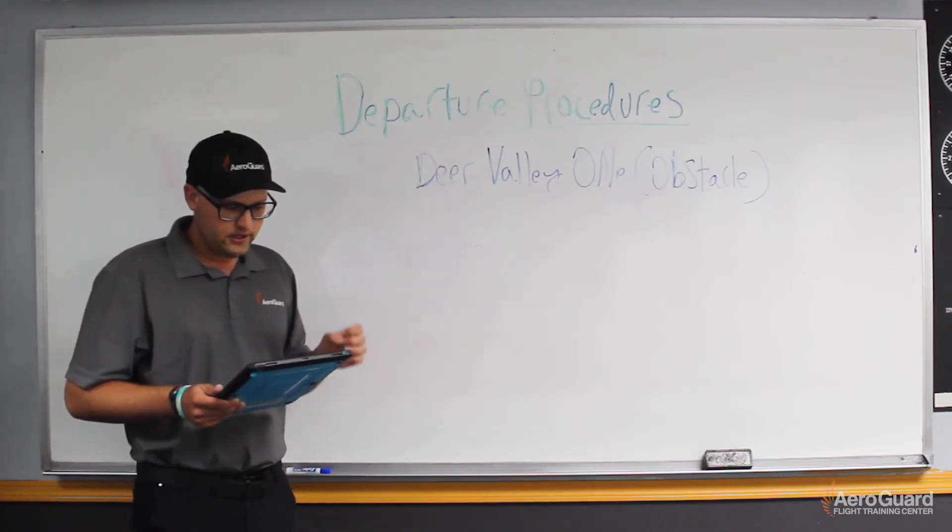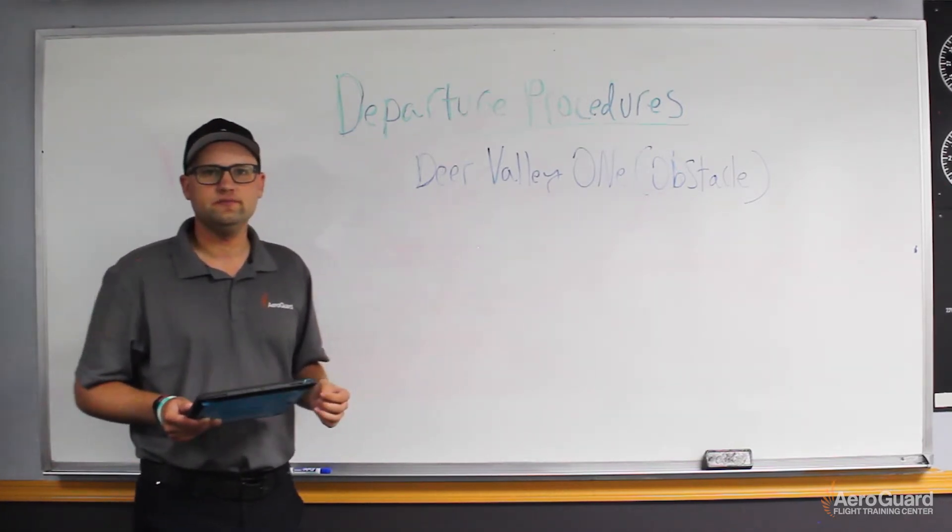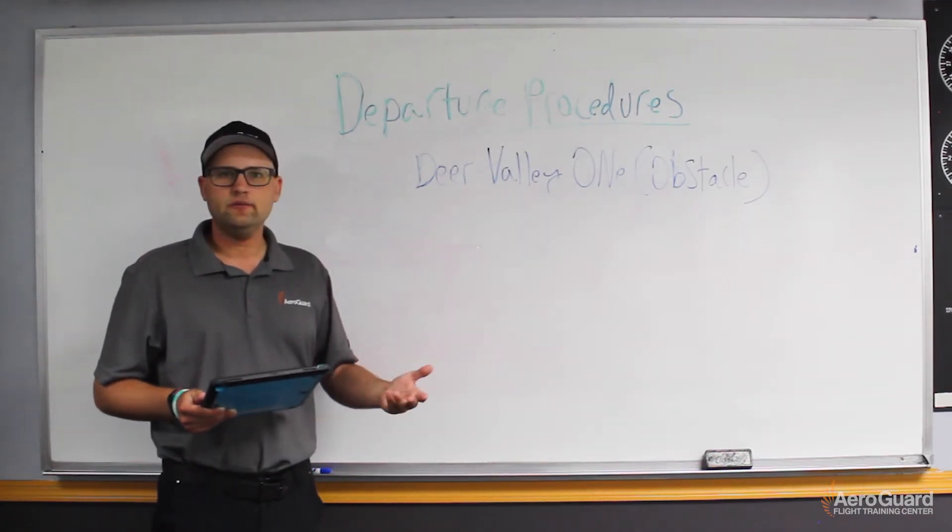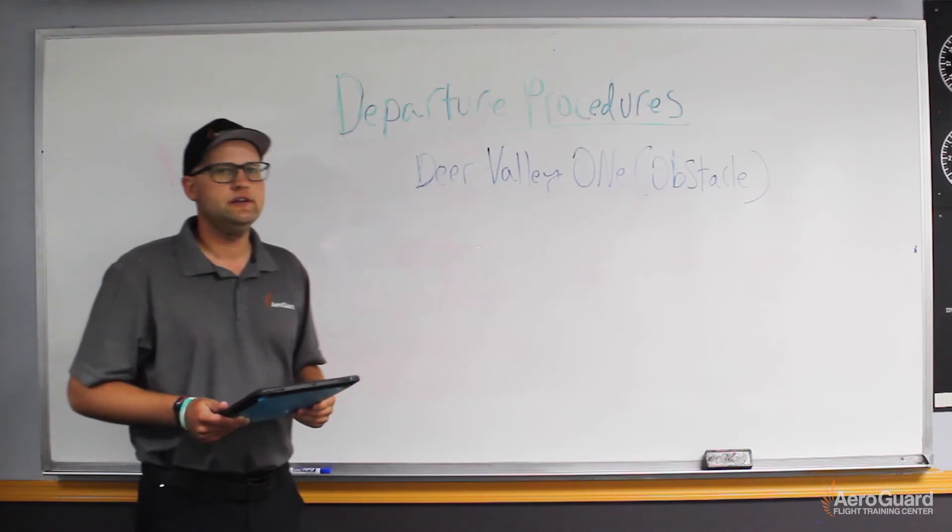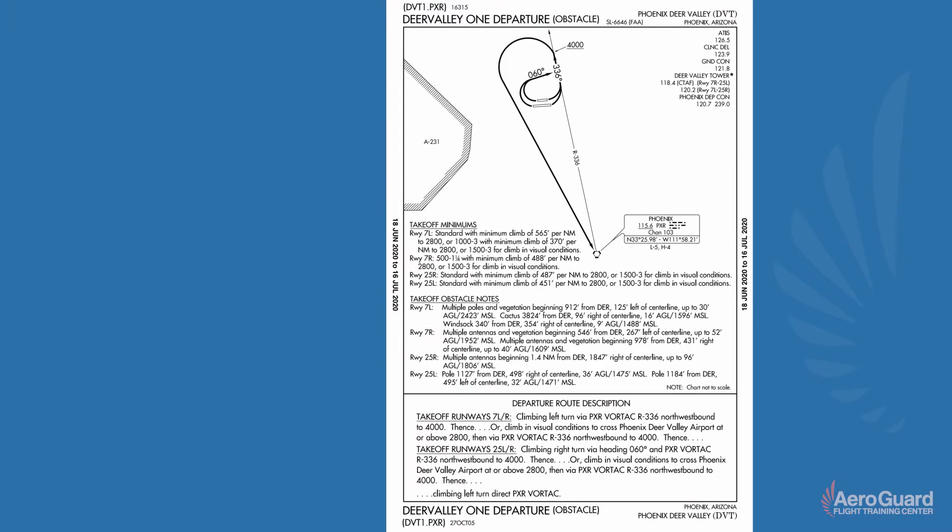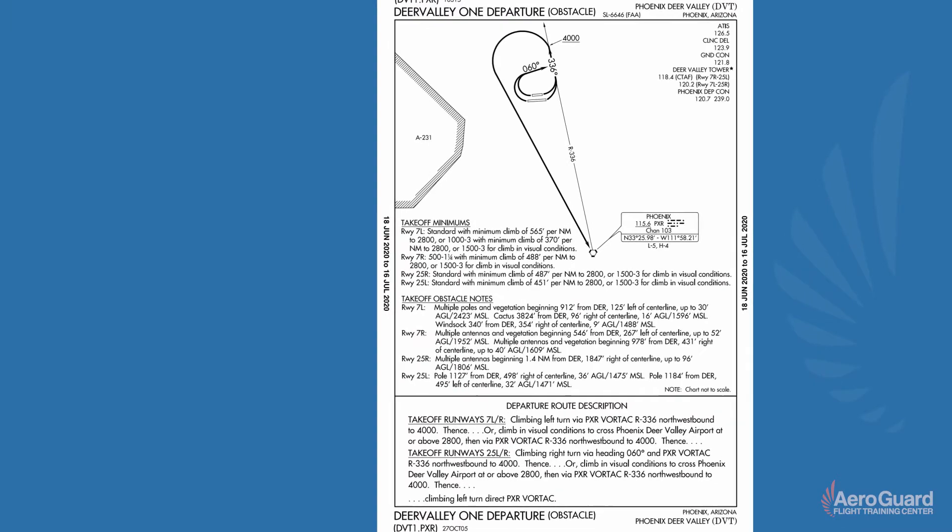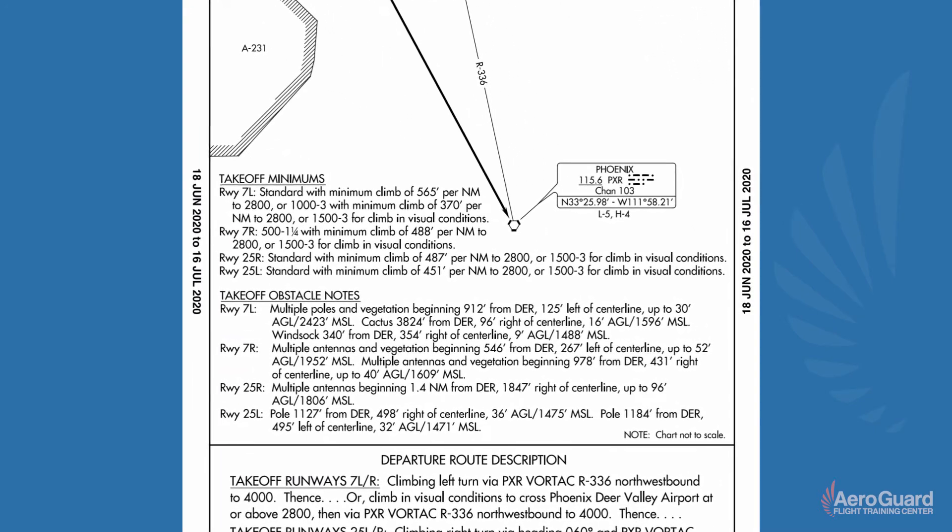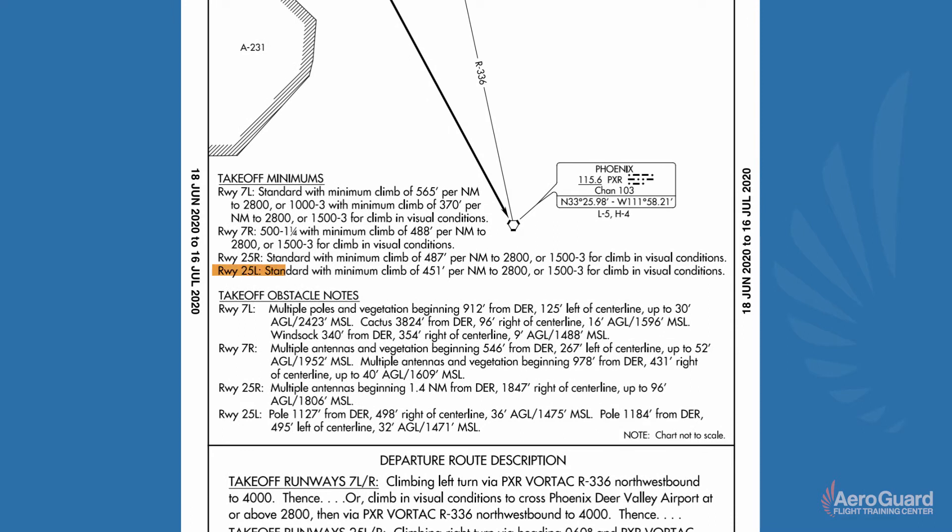The next thing that I want to cover is takeoff minimums. Takeoff minimums are very important because we need to be able to meet certain climb gradients or visibility requirements in order to legally fly obstacle departure procedures. So let's say the scenario is we're going to take off runway 25L on the Deer Valley One. So if you go to the takeoff minimums, it says standard with a minimum climb of 451 feet per nautical mile to 2800. Stop there for a second.